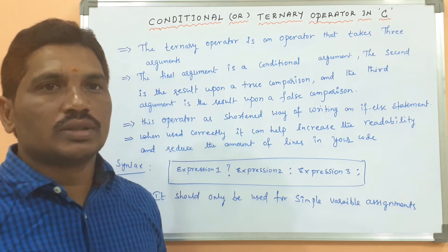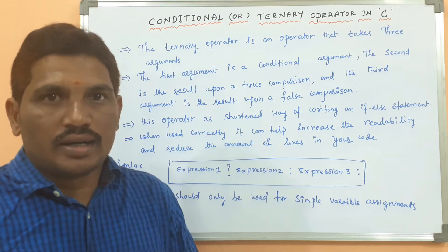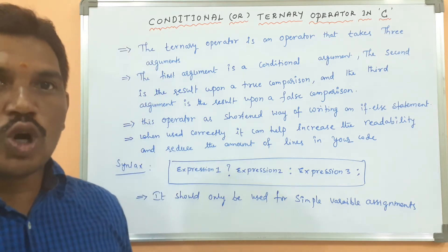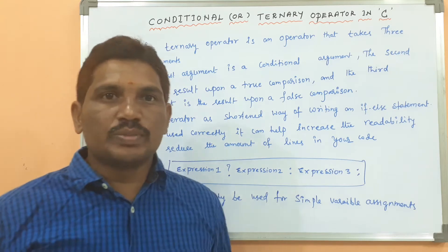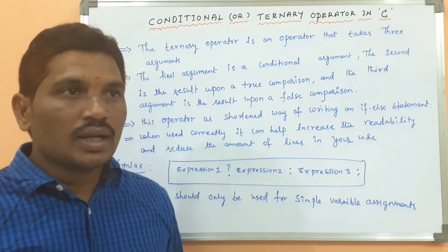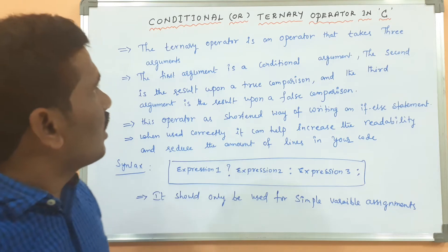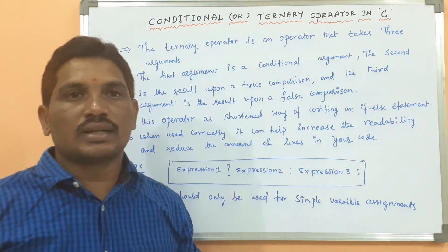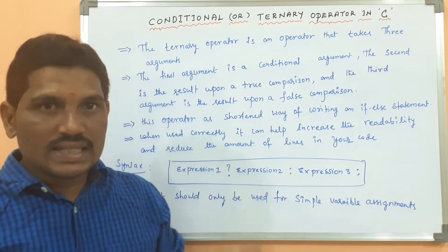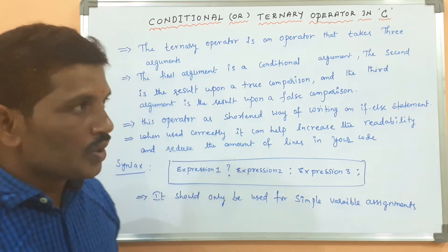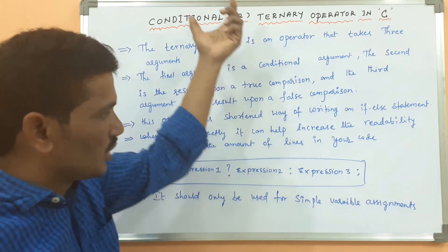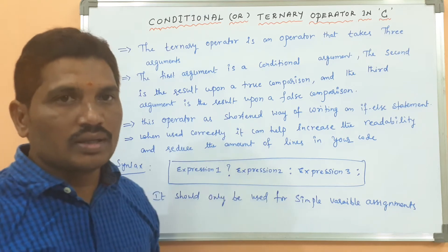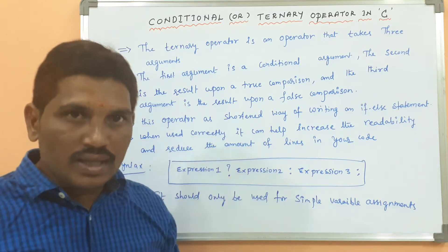I will talk about the conditional or ternary operator. In the last class I talked about bitwise operators in C, and how to use them was covered in the previous video. Today I am going to explain what a ternary operator or conditional operator is in C. First I want to explain these statements, and after that how it can be used in C programming with the help of an example.